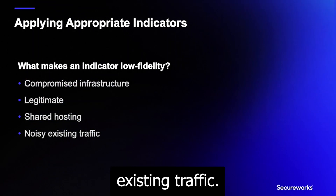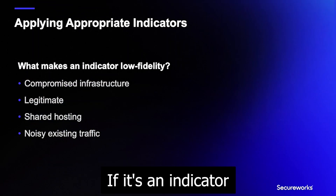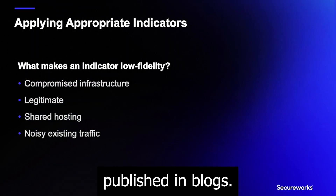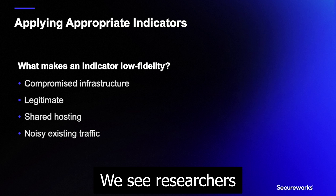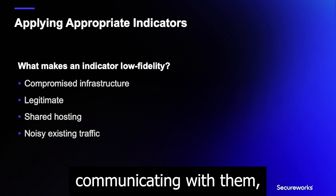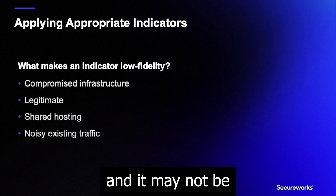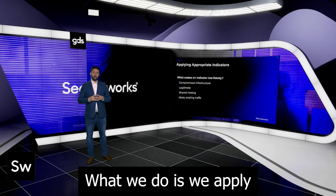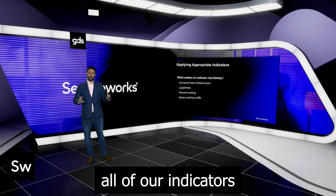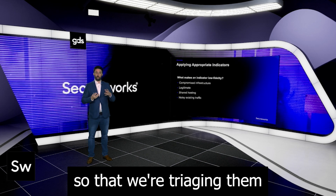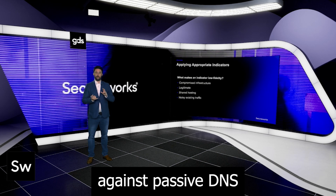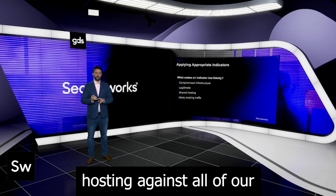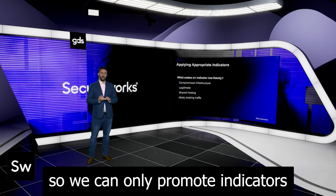Or it could just be noisy existing traffic. If it's an indicator that's been around for a long time, we often see them published in blogs, we see researchers communicating with them, and it may not be a good indicator to use. What we do is apply all of our indicators through a triage engine, triaging them against passive DNS to look for shared hosting, and against all of our customer traffic.